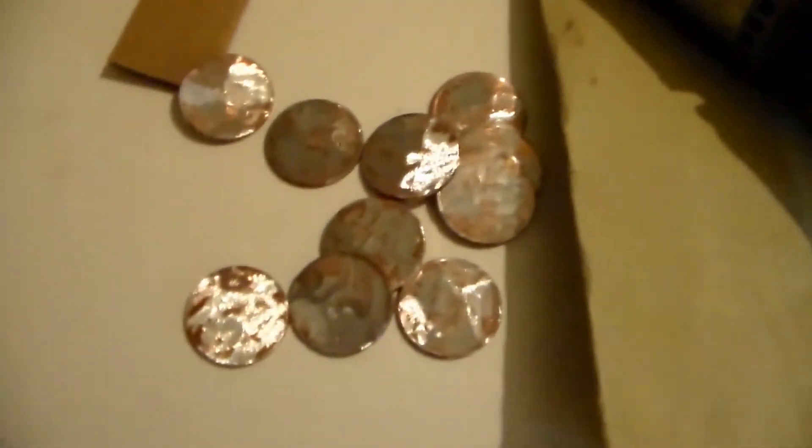Alright, next make sure your pennies are all scuffed up real good so that they're all shiny now, at least some parts so that they can get good points of contact to the zinc surface. Take all the cardboard pieces and put them over here in your electrolyte made from salt.